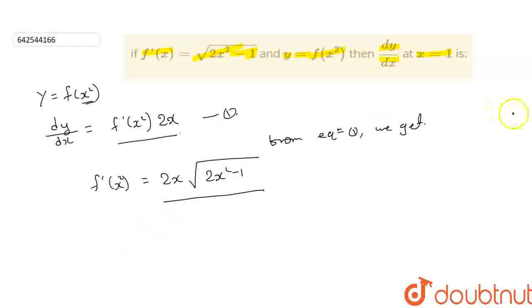Now, they have asked that, then dy by dx at x equal to 1. So dy by dx at x is equal to 1. So we have to put x is equal to 1 where the function x is available.